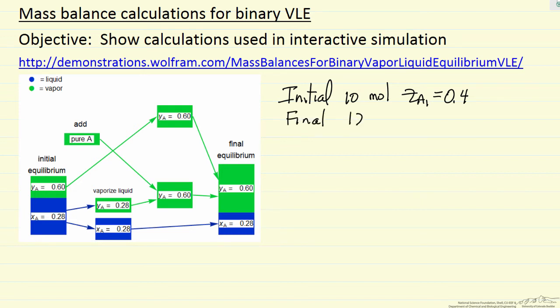Finally, we're going to end up with 12 moles, and the ZA is going to be 0.5, and that results because we had 4 moles of A initially, we're going to add 2 more moles. We add 10 total moles initially, and we add 2 moles, so this mole fraction ZA2 is 0.5.